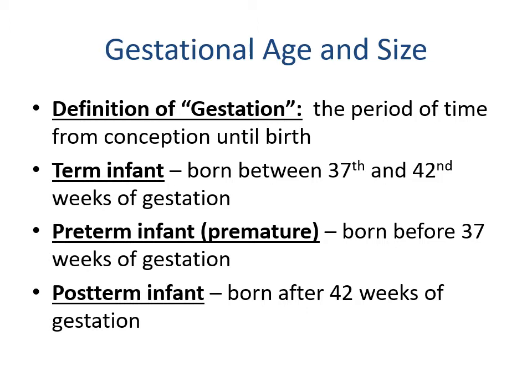Gestation is the period of time from conception until birth. Term infants are fully developed between 37 and 42 weeks gestation. Preterm infants, or prematurity, are born before 37 weeks of gestation. A postterm infant is born after 42 weeks of gestation.